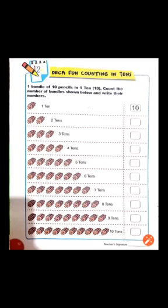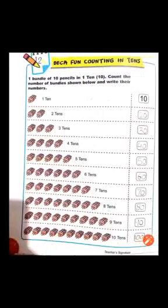Ninety. Very good. Ninety equal to nine tens. Last one is ten tens — it means ہمارے پاس ten bundles ہیں pencils کے۔ جب ہم ten bundles of pencils کو count کریں گے, because one bundle has ten pencils, تو یہ total ملکے کیا بنا دے گا؟ Hundred pencils. Very good. And hundred equal to ten tens.